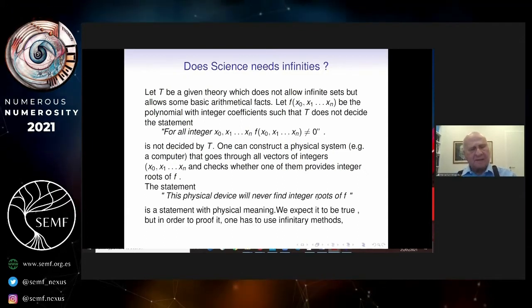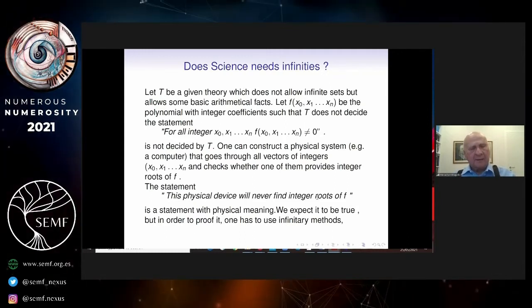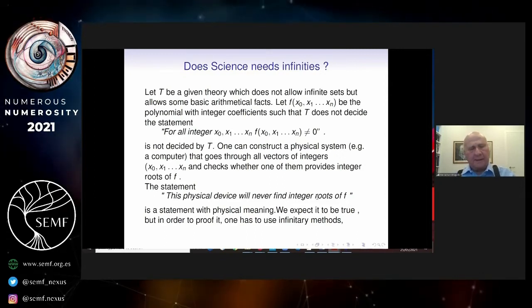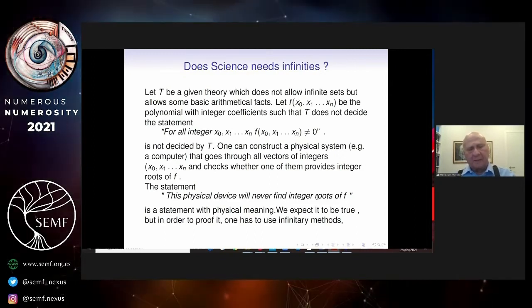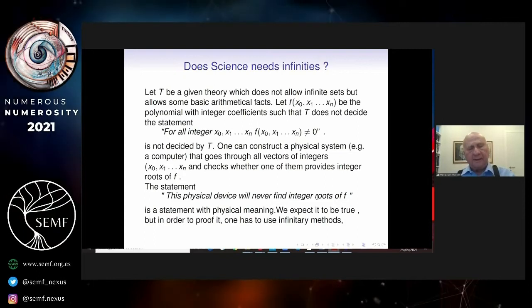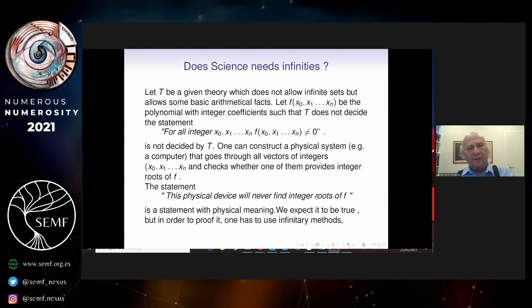This is a physical system. And you've got a statement that this physical device will never find integer roots of f. It's a statement of physical meaning. We expect it to be true, but in order to prove it, you can't do it in theory T. You have to go out.